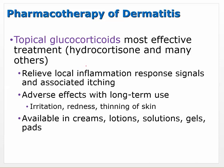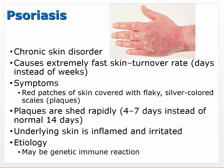The most effective treatment for dermatitis is topical glucocorticoids, a type of corticosteroid. Hydrocortisone is one example, though it is mild — many more potent options exist. These relieve local inflammatory response signals and associated itching by interrupting the signals produced during an inflammatory response. Adverse effects with long-term use include irritation, redness, and thinning of the skin. They are available in creams, lotions, solutions, and gels, and some can be obtained over the counter.